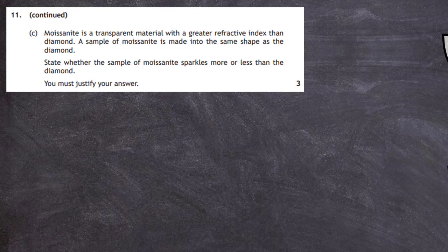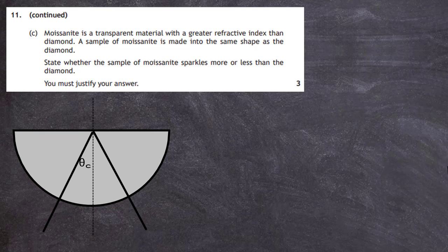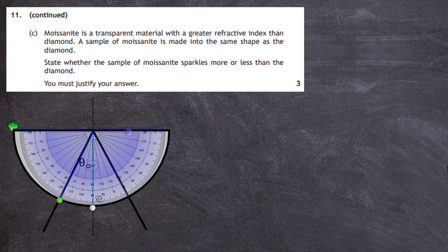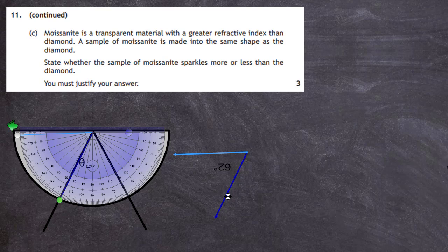Let's think back to the experiment with a semi-circular glass block — let's say this block is made of diamond. There is a critical angle shown: a ray of light entering at exactly that angle will be totally internally reflected. Using a protractor, any angle less than the critical angle means the ray refracts out of the block, while any angle greater than the critical angle results in total internal reflection. All those larger angles have the possibility of total internal reflection.